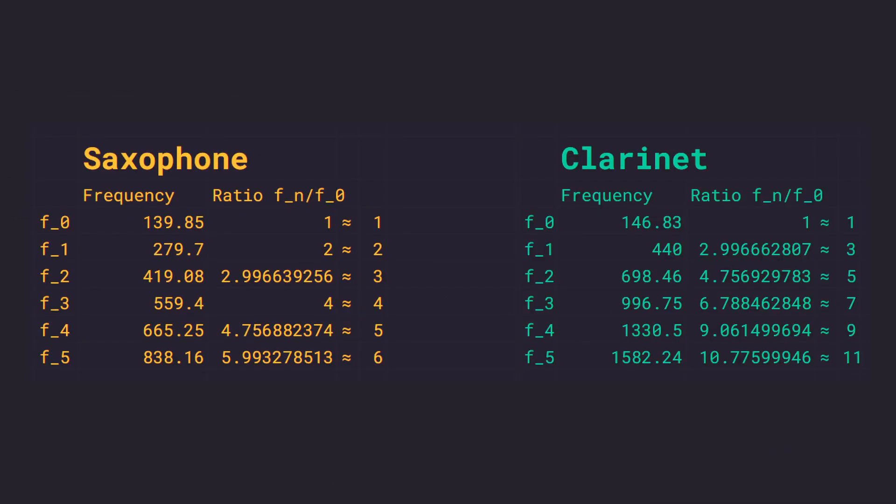Here are the overtones of the clarinet and the overtones of the saxophone. The clarinet has only the odd harmonics and the saxophone has all the harmonics. This makes the sound of these instruments unique.